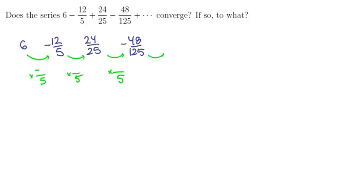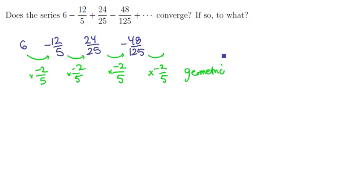On the other hand, to get from one term to the next we're multiplying the numerators by negative 2 each time. That makes the sign skip and makes them double. So if we multiply by negative two-fifths each time, we have a geometric sequence, and that means we have a formula.